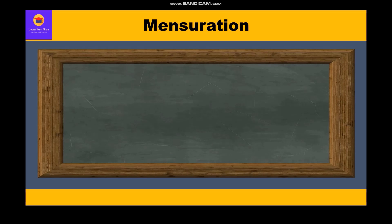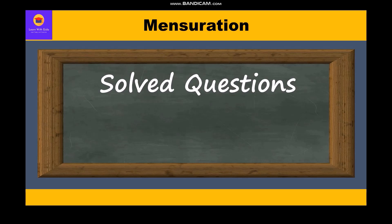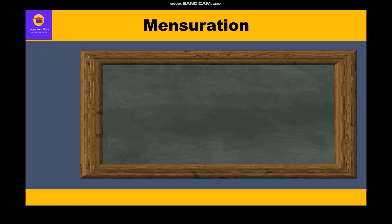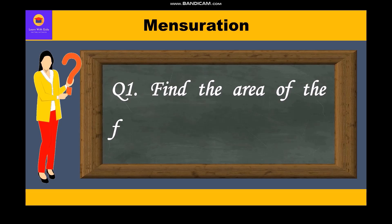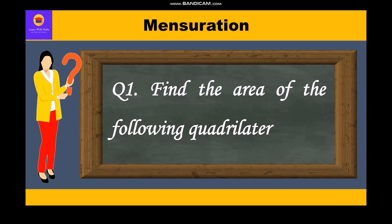Now we shall take up some solved questions related to it. Let's take the first question: find the area of the following quadrilaterals. There are three parts to this question. Let's start with the first part.